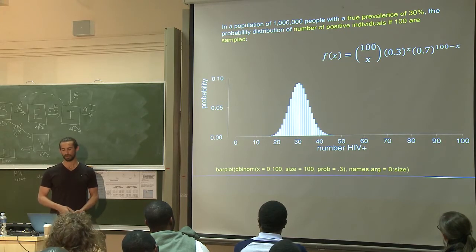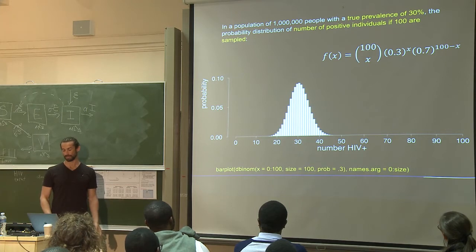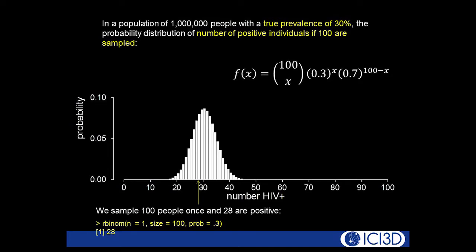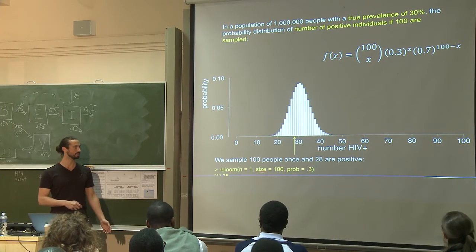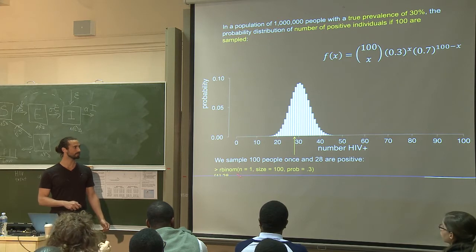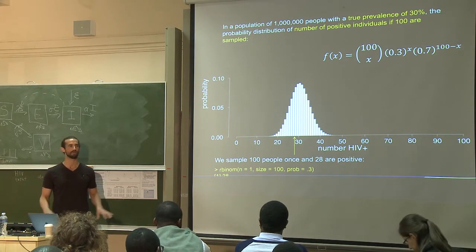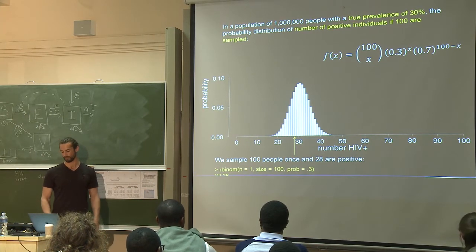If we pretend we know the true prevalence, we can visualize this distribution. The probability that 30 people test positive is pretty high, but so is 29, 28, 31, or 32. Now let's pretend we actually did this experiment where we took 100 people and tested them, and 28 are positive. In this particular random draw, we got 28 positive. Now let's go back to pretending we don't actually know the true prevalence. All we really know is we tested 100 people and 28 were positive.